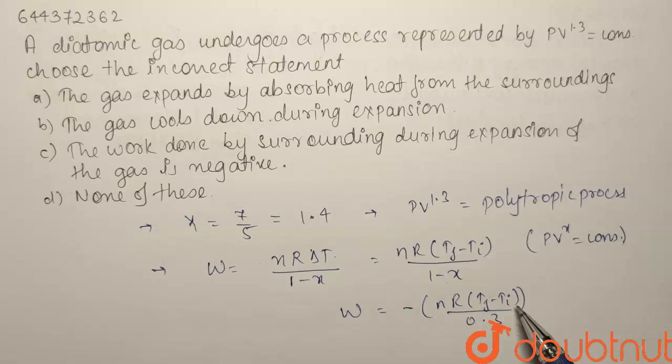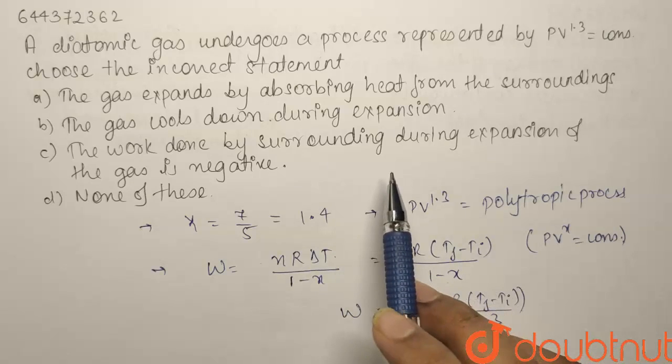So, for expansion to happen, Tf has to be less than Ti. So, it has to be a case of cooling. So, our option B is a correct statement. And we have to choose the incorrect statement. So, it will not be our answer.